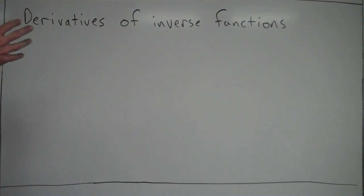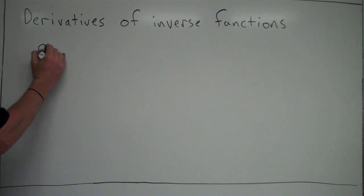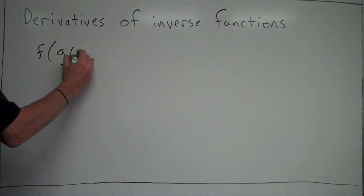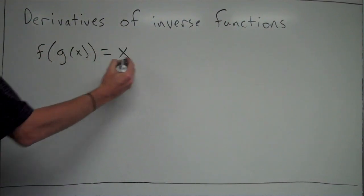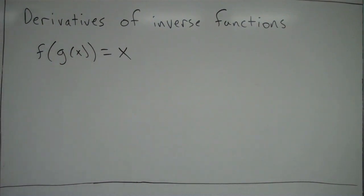But in the prior video, we talked about properties of inverse functions. And one of the properties, we said that if two functions, we called them f and g, are inverses of one another, they meet this criteria: f of g of x is equal to x, amongst other things. But that was one of the things we said, that definitely inverse functions meet this criteria.